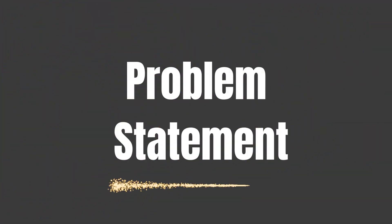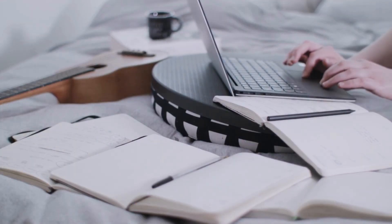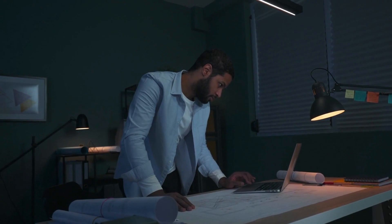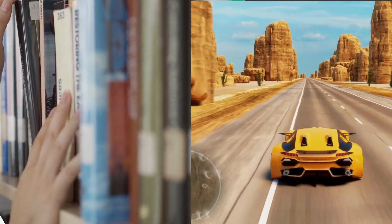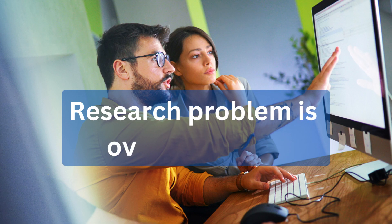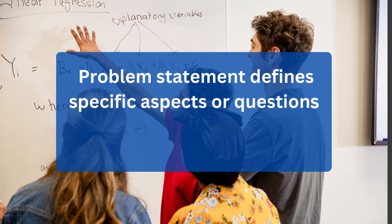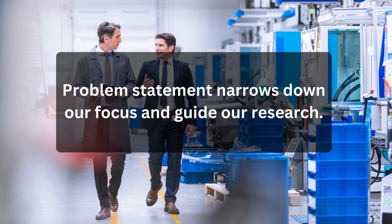Now let's move on to the problem statement. The problem statement is a concise, clear and specific description of the issue or question we want to investigate within the research problem. It helps to focus our research and provide direction. In our example, the problem statement could be: what is the relationship between the amount of time spent playing video games and academic performance among students in grades 9 to 12? So in simple terms, the research problem is the overall topic we want to study, while the problem statement defines the specific aspect or question within that topic that we aim to address. The problem statement helps us narrow down our focus and guide our research.